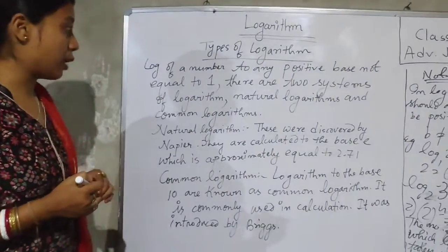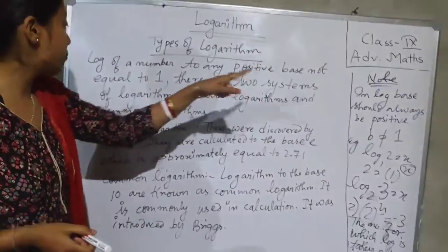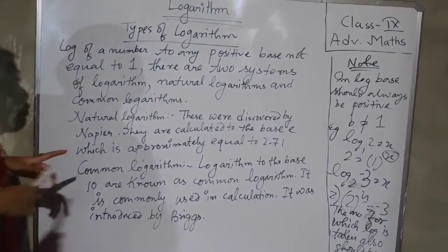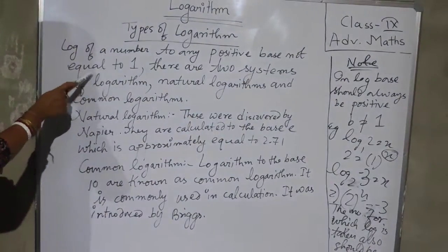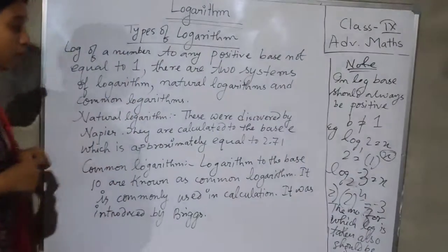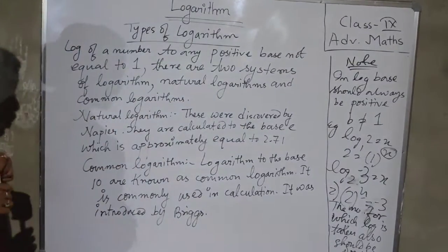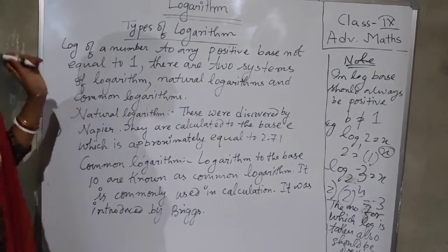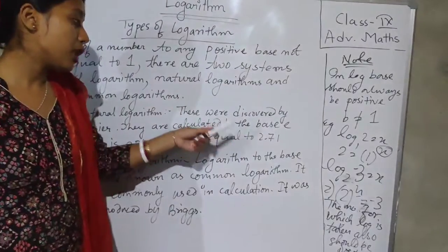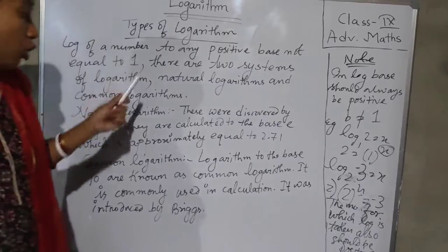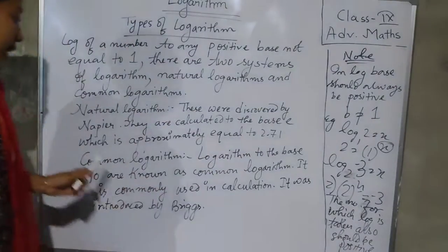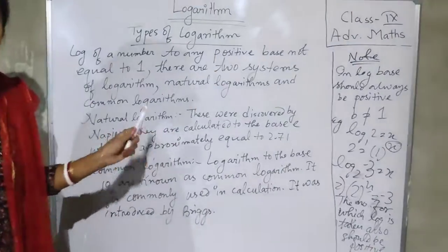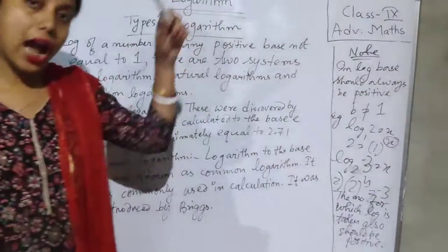Now let's come to our types of logarithm. The log of a number to any positive base not equal to 1 has two systems: natural logarithm and common logarithm. Natural logarithm was discovered by Napier. In natural logarithm, the log value is calculated to the base e, which is approximately equal to 2.71. However, this is not included in your syllabus and is used for higher mathematics.